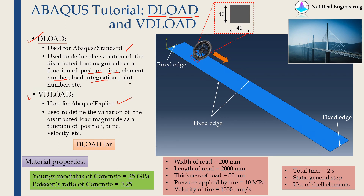Most of the time people use it to define change in load magnitude with respect to position or time. We are going to solve this example, which is a very crude simplification of a suspended bridge. I am representing the road on the bridge with shell elements. The width of the road is 200 mm, length is 2000 mm, and thickness is 50 mm — which we will define in the shell section.